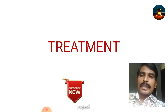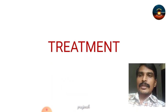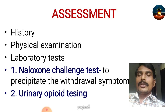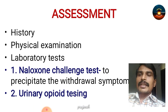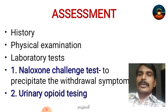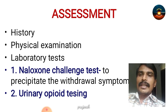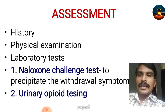The treatment of opioid use disorders begins with thorough assessment — taking history, doing a thorough physical examination, and confirming by laboratory tests. This includes a positive naloxone challenge test, where a dose of naloxone is given to precipitate withdrawal symptoms, and also urinary opioid testing, which confirms that a person has used opioids.